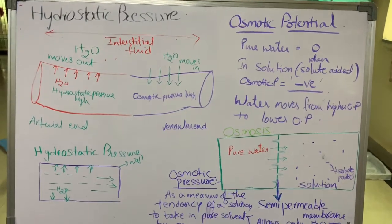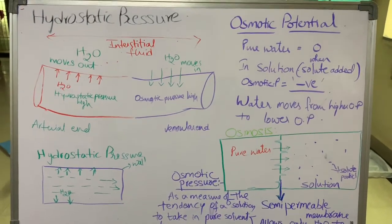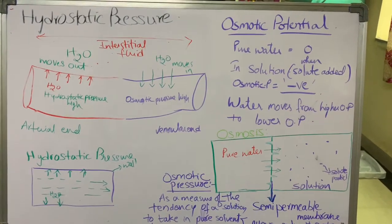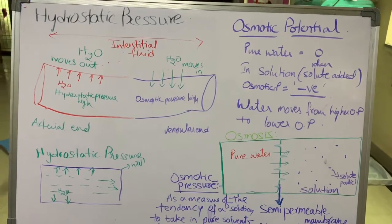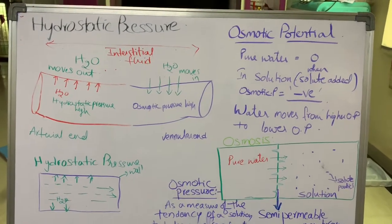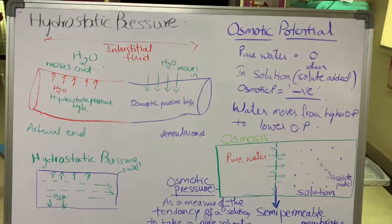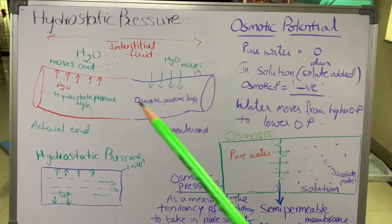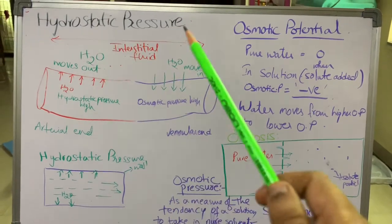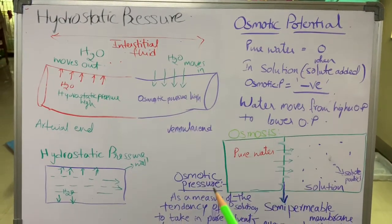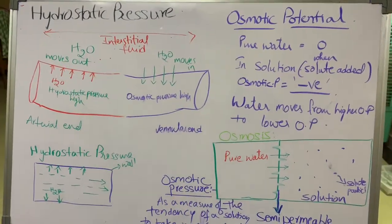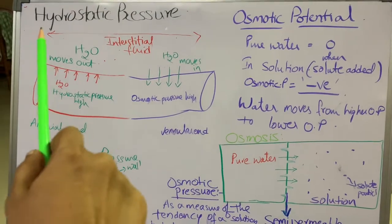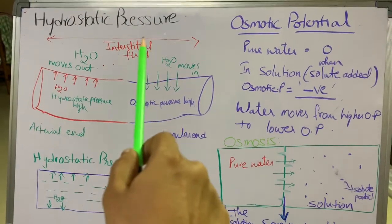Welcome to another session. Before we are going to learn about urine formation in the kidneys, let us study about the two chemical processes: hydrostatic pressure and osmotic pressure.